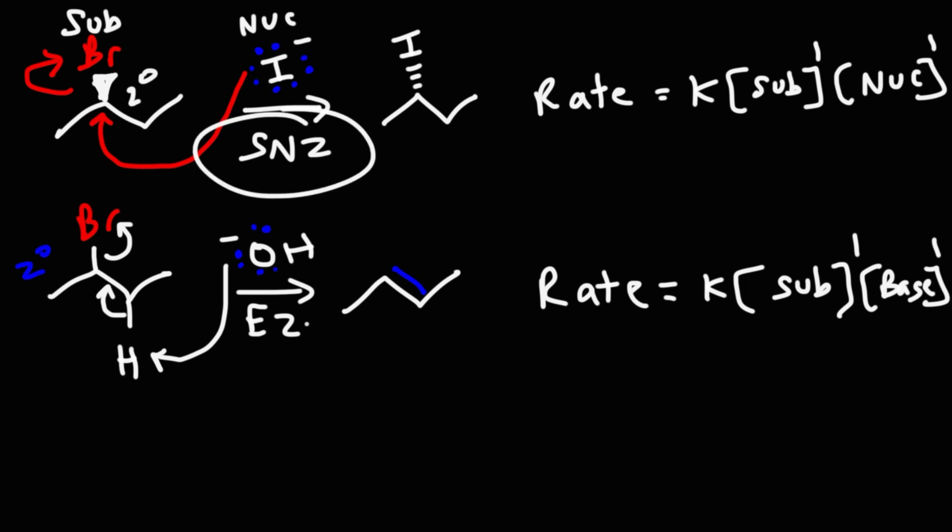So both SN2 and E2 mechanisms are second-order, bimolecular reactions. That's basically it for this video — now you know how to write the rate law expressions for the SN1, SN2, E1, and E2 reactions. For those of you who want additional practice problems on SN1, SN2, E1, and E2 reactions, check out the links in the description section below. I'll be posting a practice test for those of you who are interested.